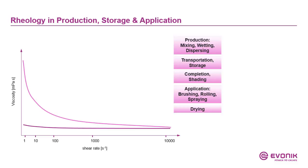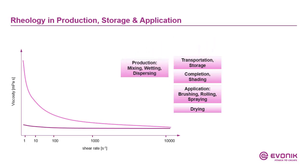Why is it important to have such a pseudoplastic behavior in coatings? Here we have the full life cycle until a coating is applied — we have production, storage, and application processes. During production, high shear forces are applied, and this is good for wetting, good homogenization of the coating, so the viscosity in this case is low.